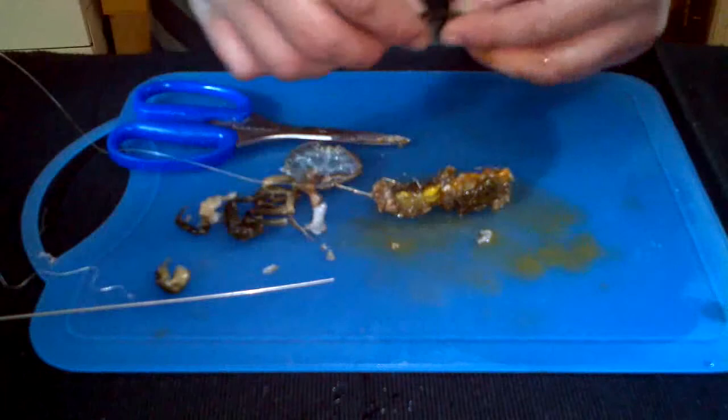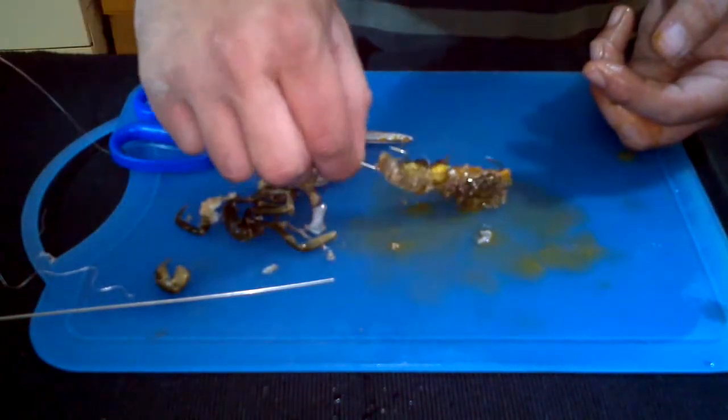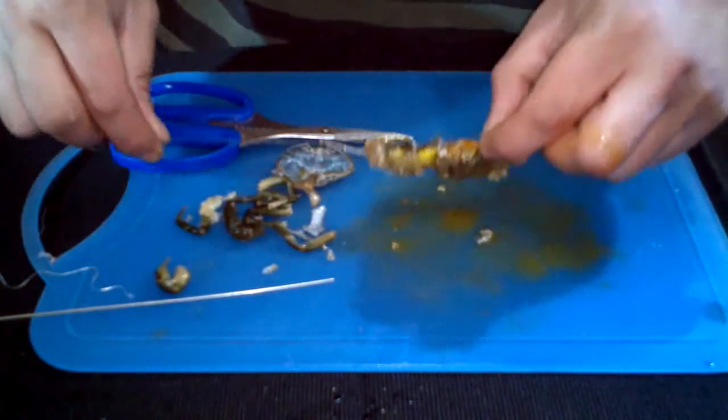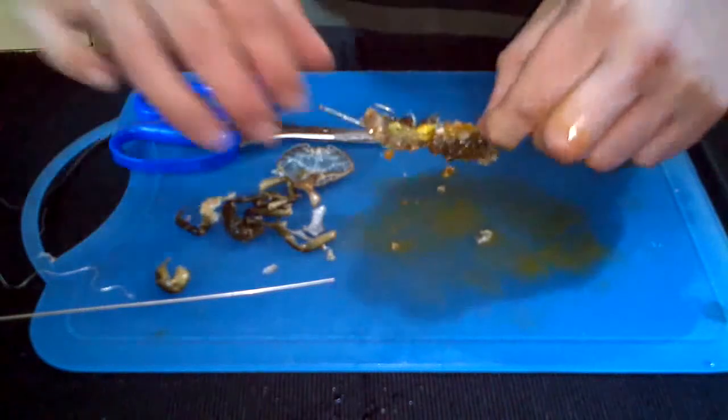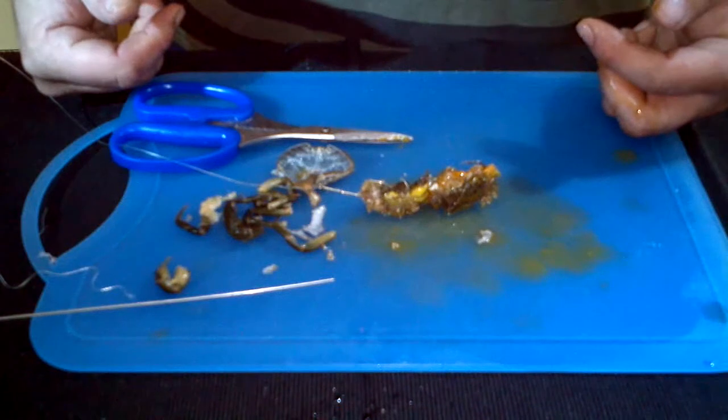You can always peel these legs off and stick them on the end for a little bit of extra attraction. Perfect bait for smoothhound, bass, rays. They all love it.